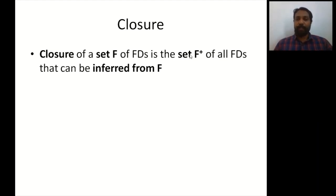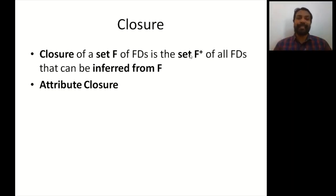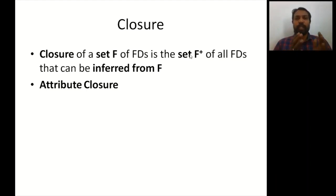It is difficult to find the F closure directly, so it is better to find attribute closure. Attribute closure is applicable in many cases. If you want to determine the candidate key of a particular table, by determining the attribute closures you can easily get this. Attribute closure shows which attributes are dependent on a particular attribute.